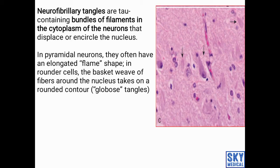The second finding is neurofibrillary tangles, which contain tau protein. A tangle is an aggregation of microtubule-binding proteins. These are extracellular structures present after neuronal death. Tau proteins appear as flame-shaped rounded cells.